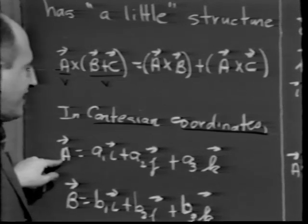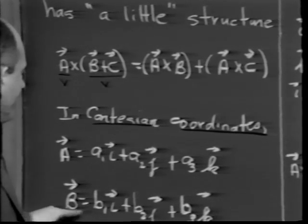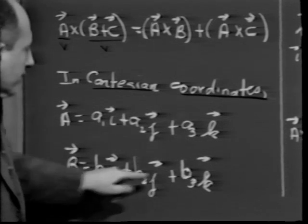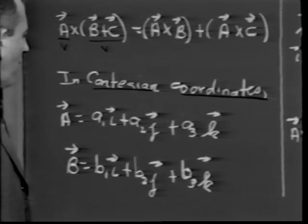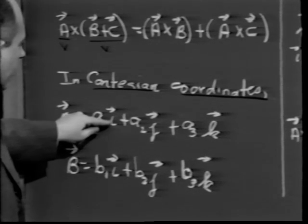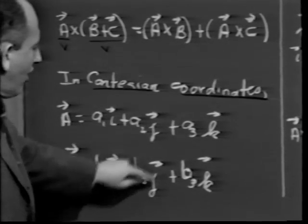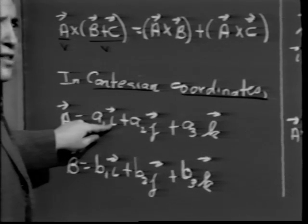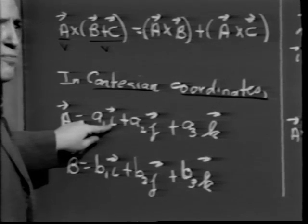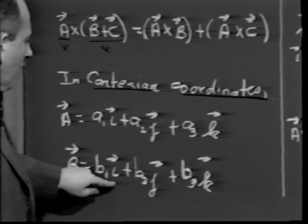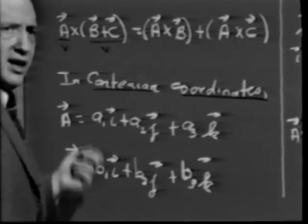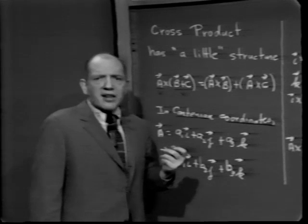Cartesian coordinates have a lot to offer. Writing a = a₁i + a₂j + a₃k and b = b₁i + b₂j + b₃k and multiplying term by term, we observe an interesting situation. When you cross i with i, j with j, or k with k, you always get the zero vector, because the sine of the angle between two parallel vectors is 0.